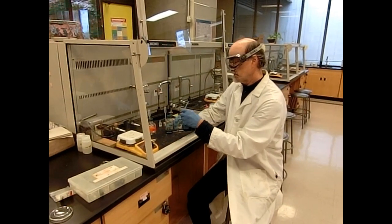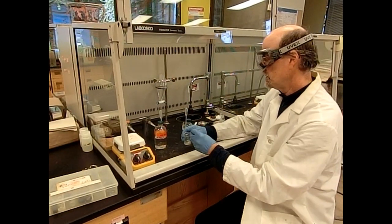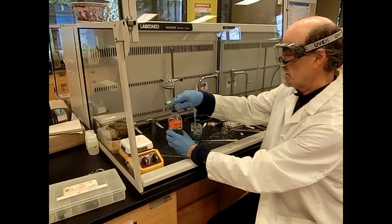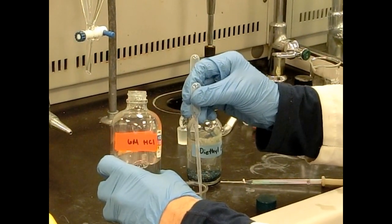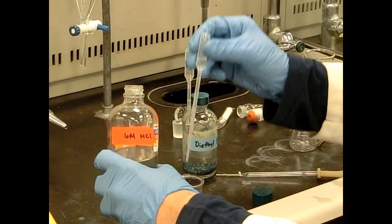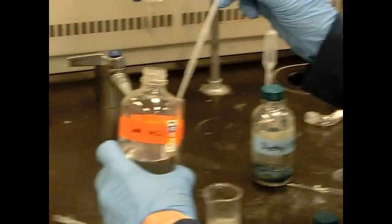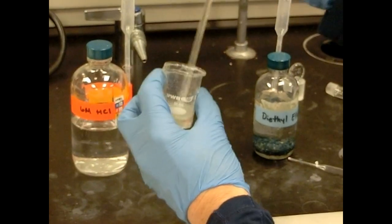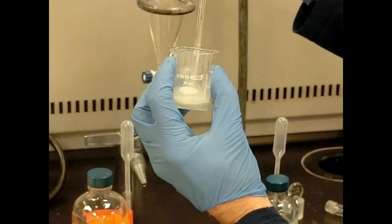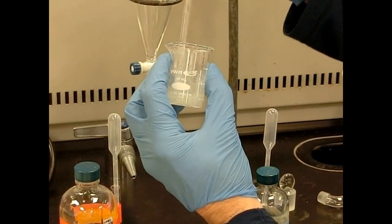So we're on our last step. We have our Grignard. All the dry ice is sublimed. We have a little bit of ether in our gummy residue. Remember this is the deprotonated benzoic acid. So I'm going to reprotonate it with six molar HCl. And you can add roughly five mL to this. So this will reprotonate it. We won't see much change at this point. And so the HCl is an aqueous system. Stir this up a little bit to make sure everything reacts.